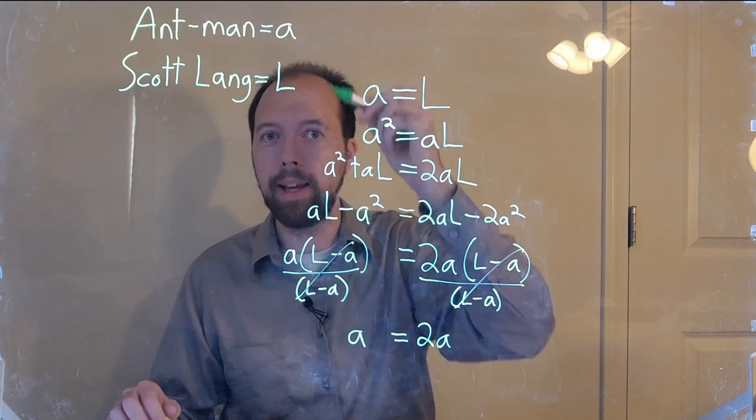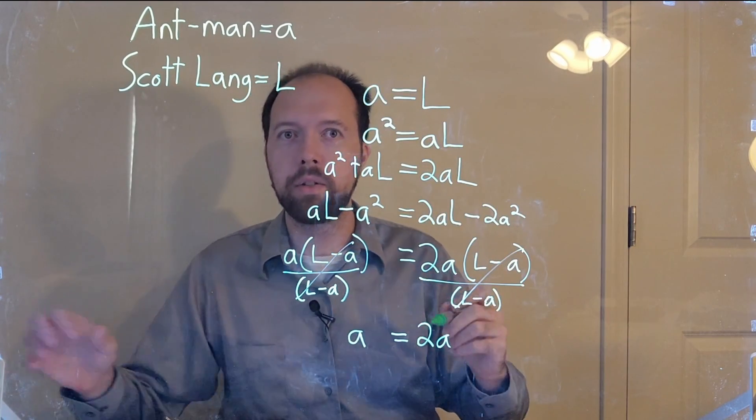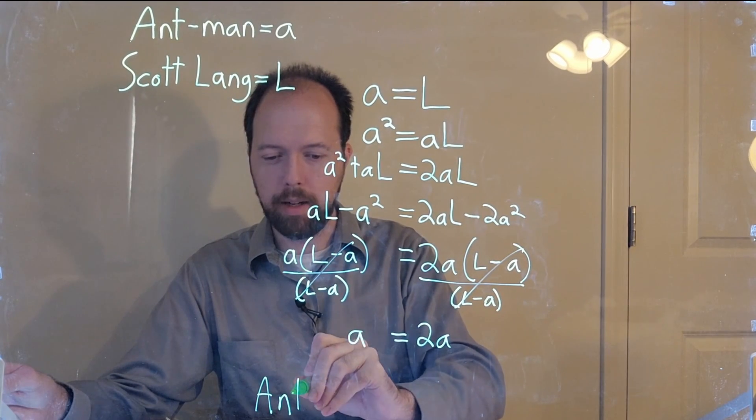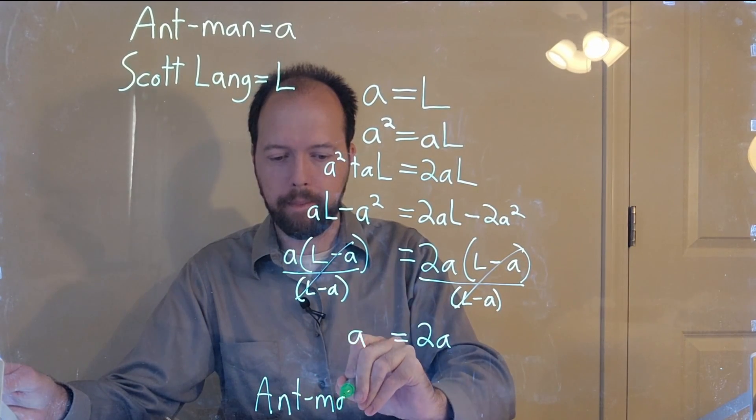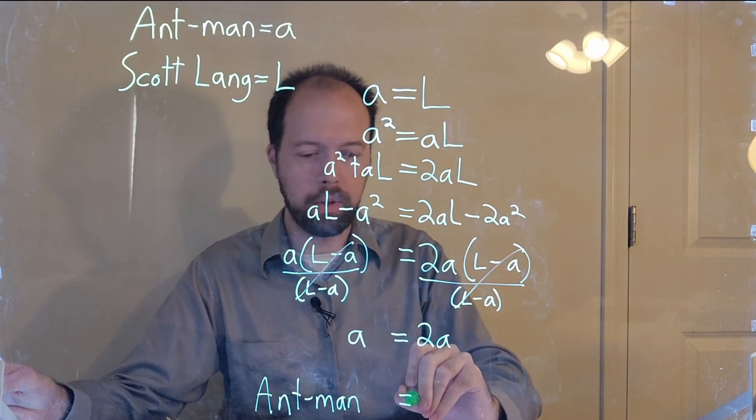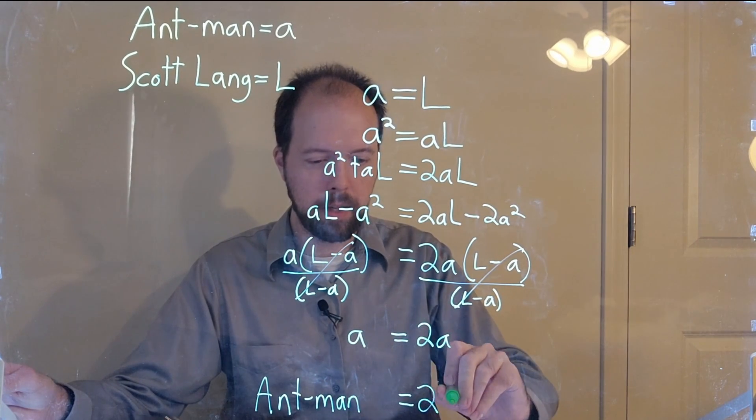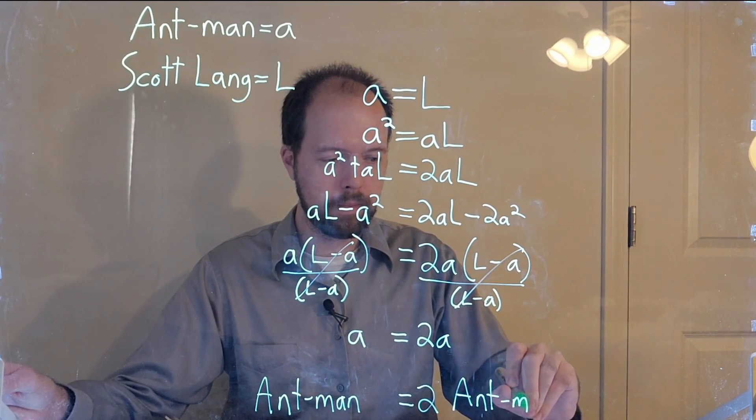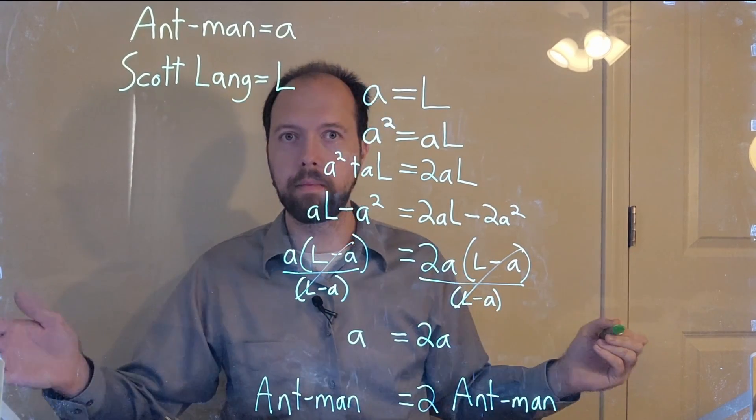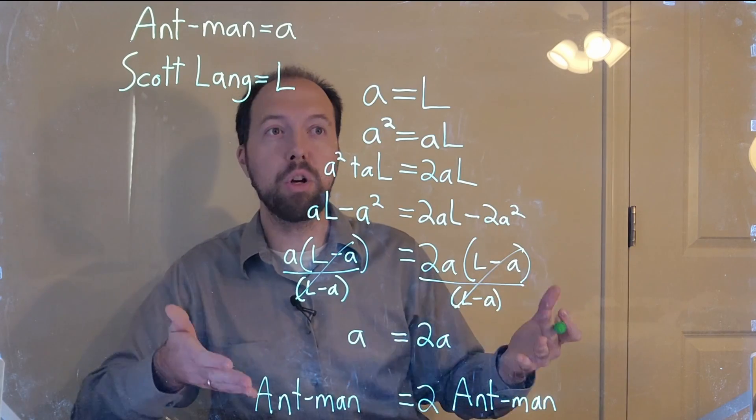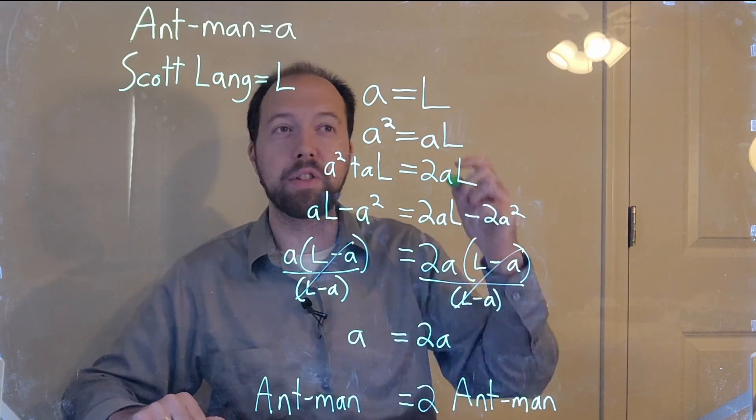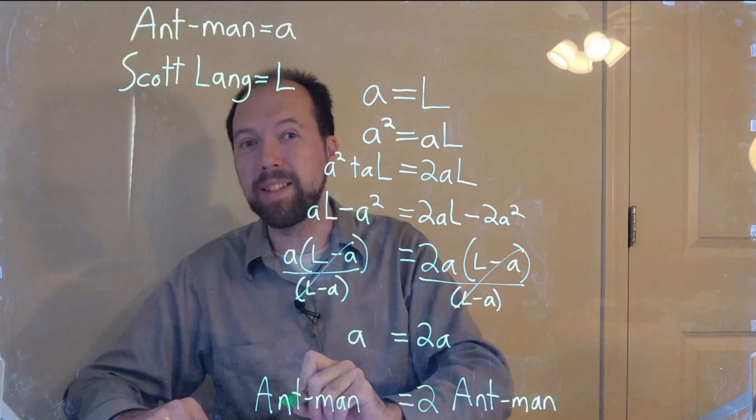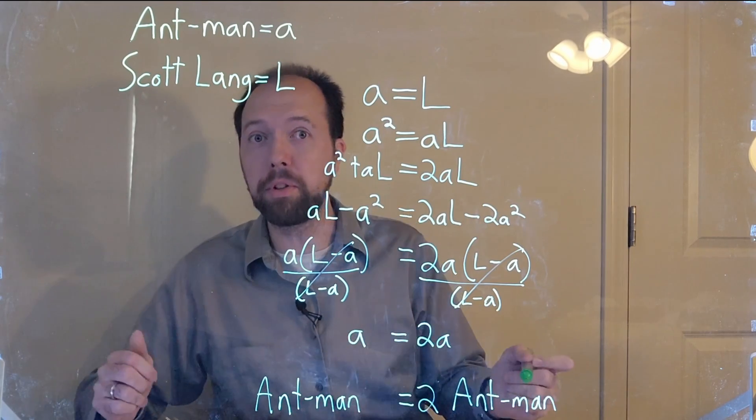But what is A? A is Ant-Man. So that tells us that Ant-Man is equal to 2 Ant-Men. There we have it. This proves that starting with the assumption that Scott is Ant-Man, that's all we need to assume, and that tells us that Ant-Man is equal to 2 Ant-Men.